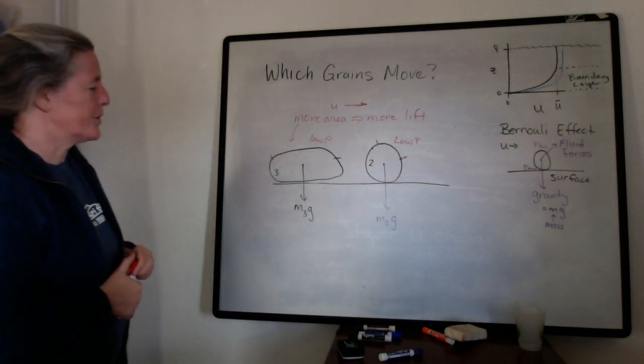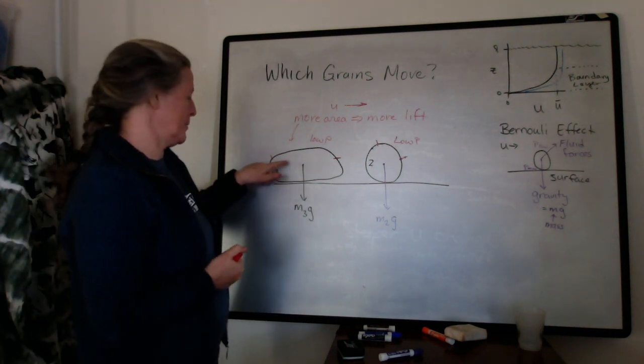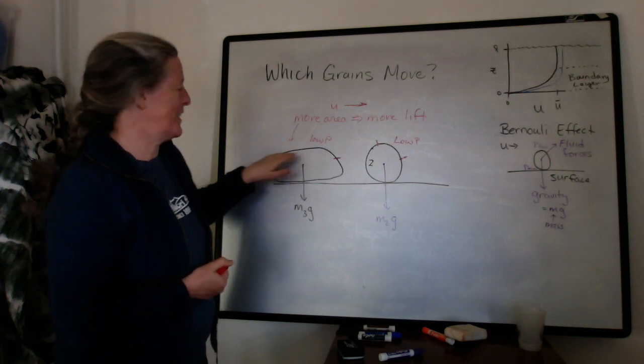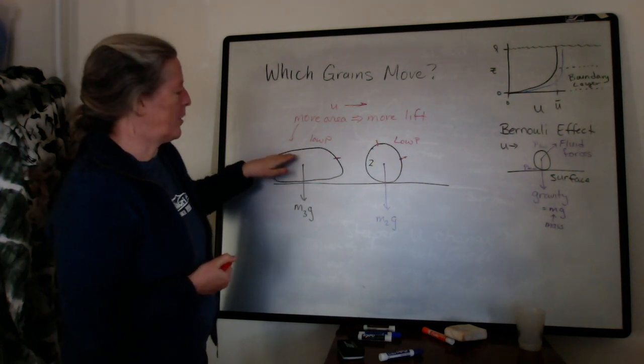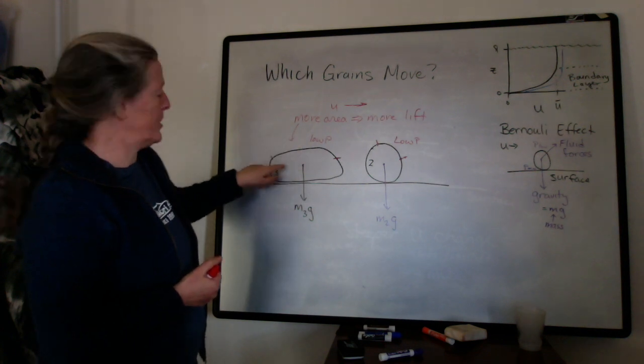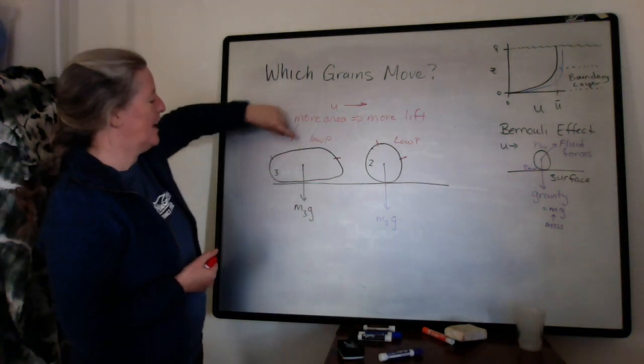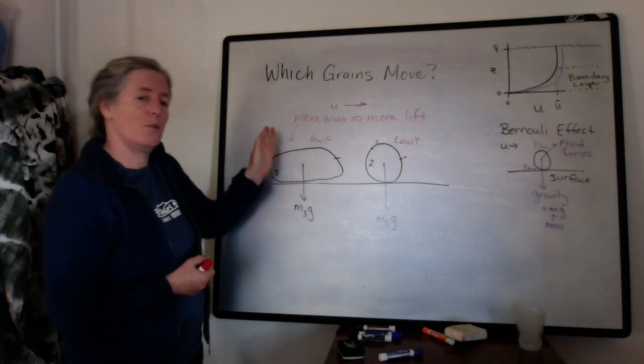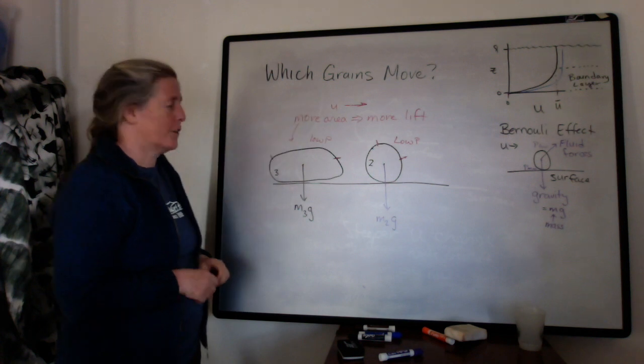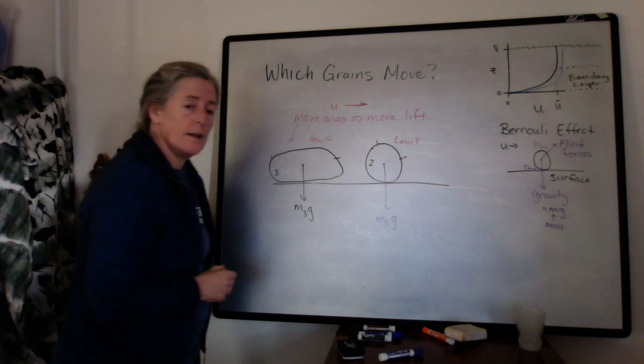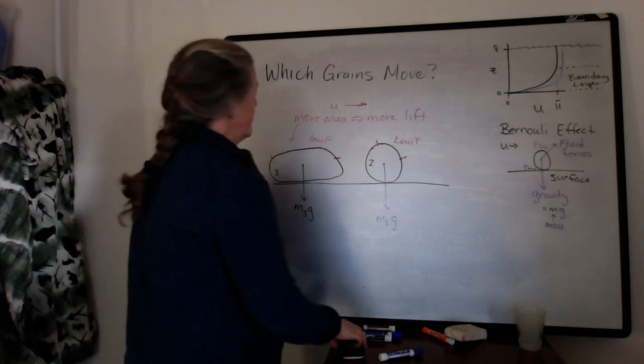So the way I drew this, we don't know the density of this grain. The way I drew it, it's much larger because I wanted a lot of surface area here. But the point is that even if it's much larger, it might get lifted sooner because there's this really large area for that low pressure to work on to develop a greater lift force. So the shape of the grain also matters a great deal.